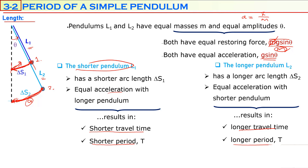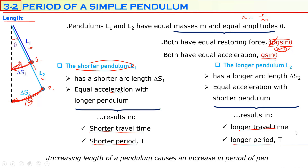This means the pendulum with a longer length will have a greater period. Increasing the length of the pendulum causes an increase in its period. So length has an effect on the period: greater length means greater period, shorter length means shorter period.